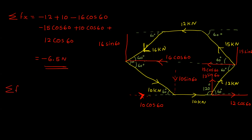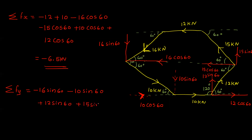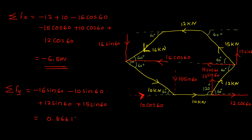Sum of Fy is equal to the y-direction components: minus 16 sin 60, minus 16 sin 60, minus 10 sin 60, plus 12 sin 60, plus 15 sin 60. That is equal to 0.866 kilo Newton.